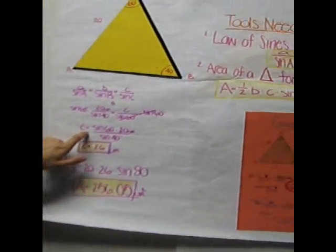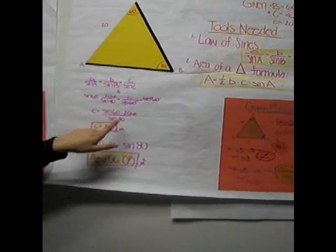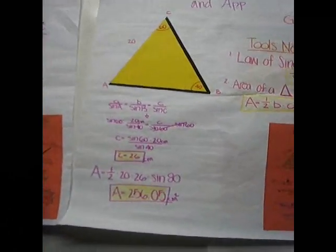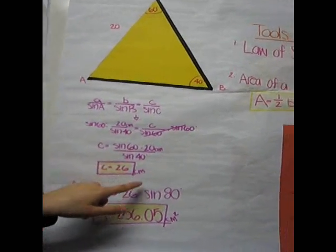And once you cancel out the denominator on this side, you do it to the next, and you get side c equals the sine of 60 times 20 centimeters over sine of 40. And when you multiply that out, you get side c equals 26 centimeters.